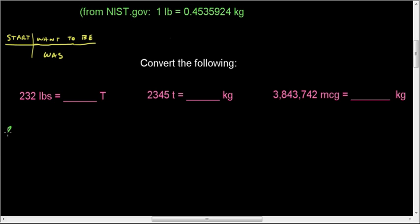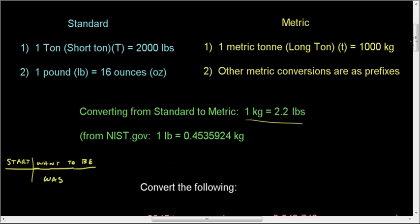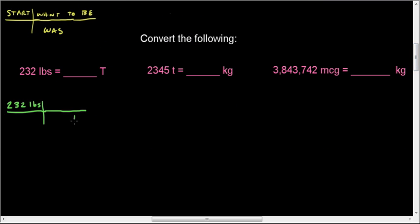For our first example, we have 232 pounds. That's where I'm starting. And then I have to have my conversion from pounds to short tons. That's 2,000 pounds in one short ton. Where I was was pounds. Where I want to be is short tons. So I have 2,000 pounds in one short ton. We multiply straight across the top and then divide straight across the bottom, all in one shot. That's 232 times 1 divided by 2,000, which gives me 0.116.